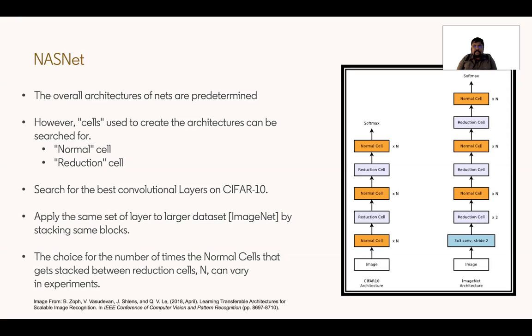In this architecture, the number of normal cells can vary, and the variable used is N, which can be a hyperparameter for experiments.